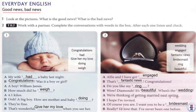Number two: someone got engaged — they got a ring and they're going to get married, so that's good news. A says: 'Alfie and I have got engaged.' B says: 'That's fantastic news, congratulations! Do you like my ring?' 'Wow, diamonds — it's beautiful! When's the wedding?' Remember, people get engaged before they get married. 'We're thinking of getting married next spring.' 'I hope I'm invited.' 'Of course — I want you to be a bridesmaid.' A bridesmaid is one of the women's best friends who stands with the bride when the man and woman get married.